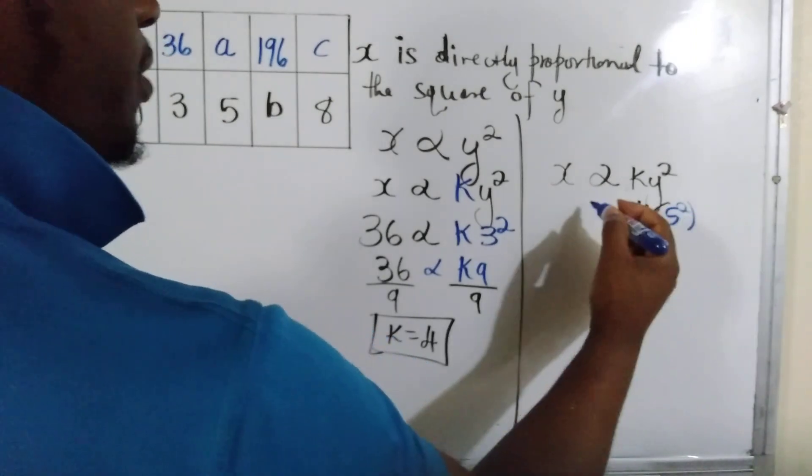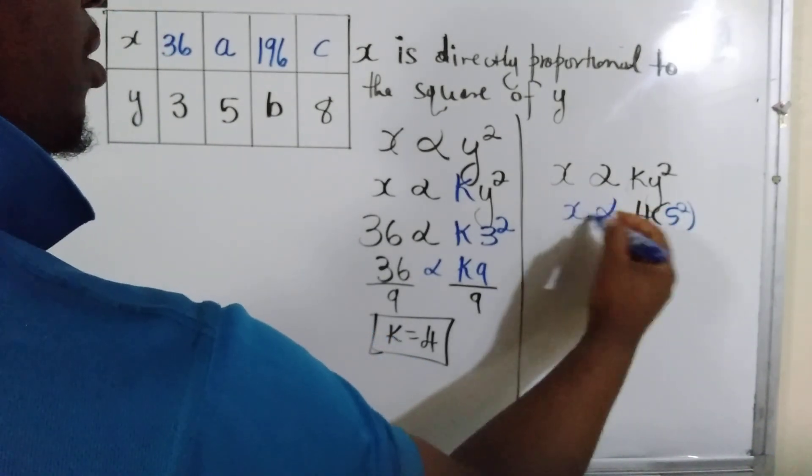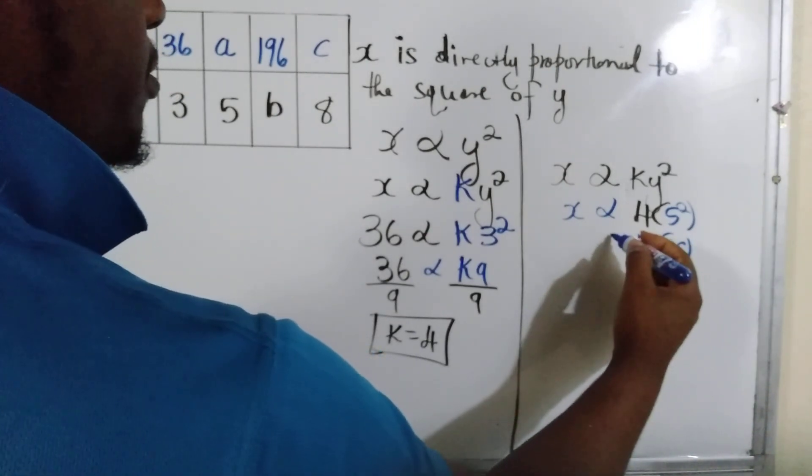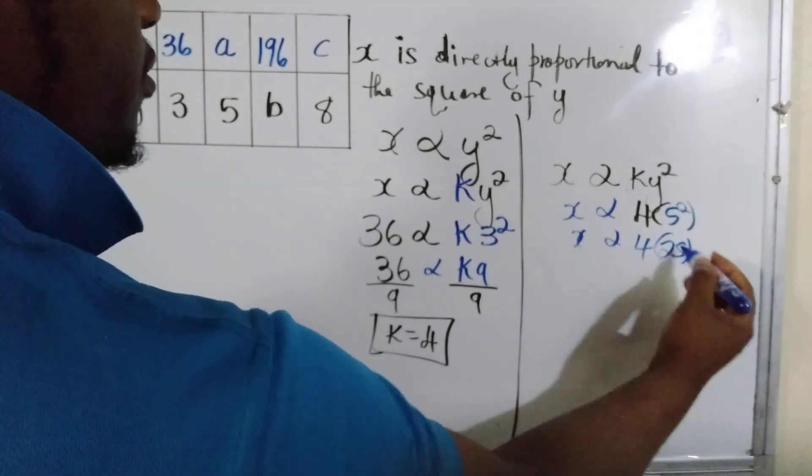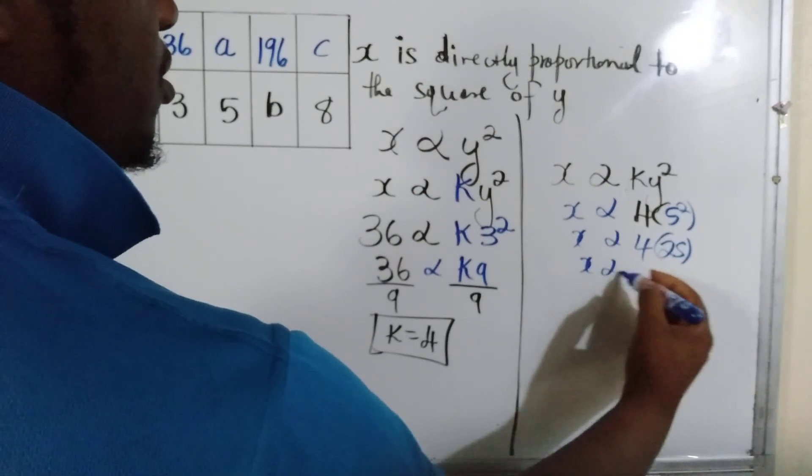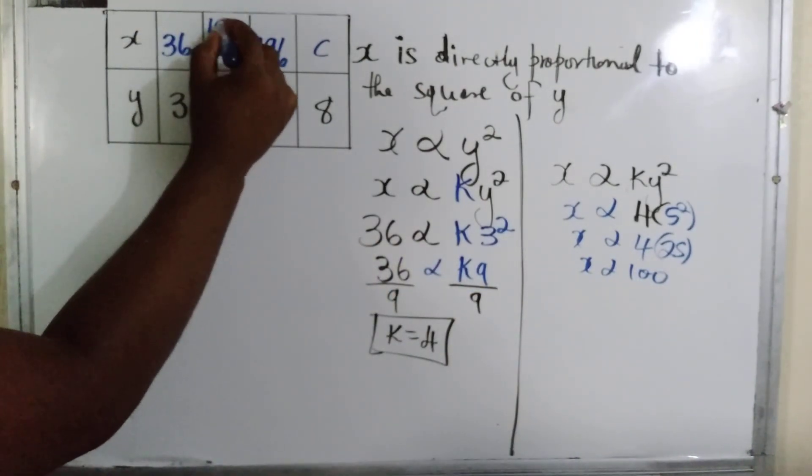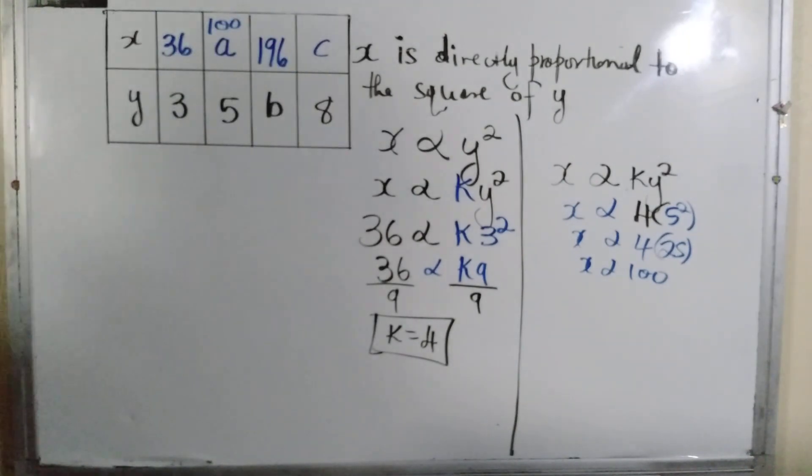y is 5 squared. 5 squared is 25, we multiply by 4. 4 times 25 gives us 100, so x would be 100. All right, we're going to do this one now. You guys are going to do c for me.